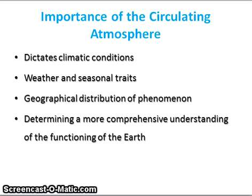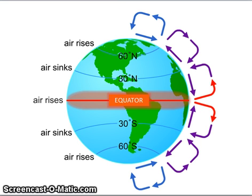Firstly, it dictates our climatic conditions. The pattern of circulation gives rise to differences in rainfall at different latitudes, weather as well as seasonal traits. Atmospheric circulations determine the geographical distribution of phenomena on the Earth's surface, and we need to have a more comprehensive understanding of the function of the Earth. For example, as air rises, it loses its capacity to hold moisture — as a result, rainfall is highest at the latitudes where air rises.